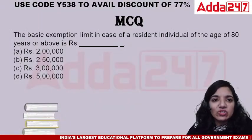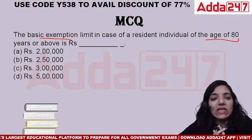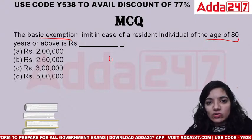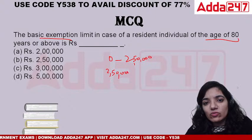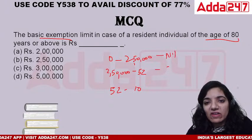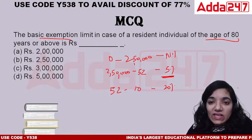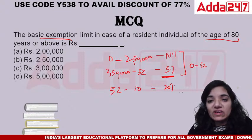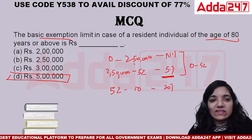What is the basic exemption limit for persons above 80? Those above 80 are called super senior citizens. For those below 60, the slab rate is 0 to 2 lakh 50, then 2 lakh 50 to 5 lakh, then 5 lakh to 10 lakh — with 0%, 5%, and 20% tax. For super senior citizens, the slab starts from 5 lakh. So the correct answer is D.